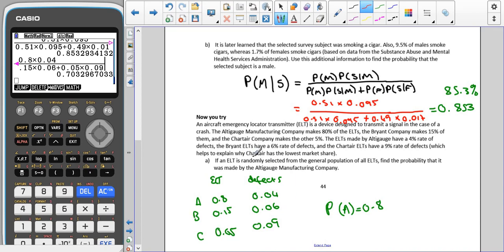Now this information I wrote down whilst I was reading the question the first time, and you can see that as soon as I was seeing it, ELTs is what we're looking at. 80% of them were made by A, 15% of them by B, 5% by C. Then we were looking at defects. 4% of them were made by A, 6% by B, and 9% by C.